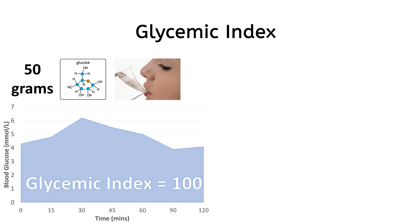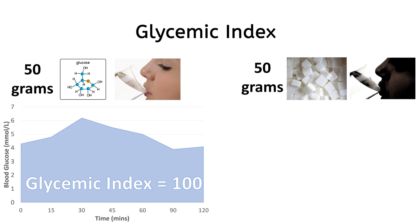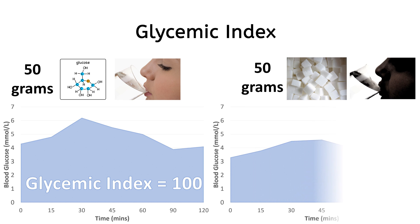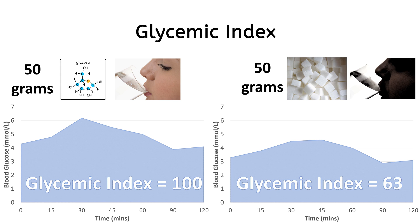Now suppose a person is given 50 grams of table sugar — the blood glucose rise will be lower than with pure glucose. The area under the curve of sugar is lower than that of pure glucose. With a Glycemic Index of sugar at 63, we can roughly say that if pure glucose causes a 100% rise in blood glucose levels, sugar will only cause a 63% rise. So sugar has a lower Glycemic Index compared to pure glucose.